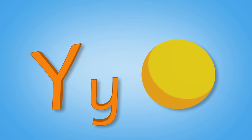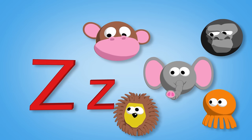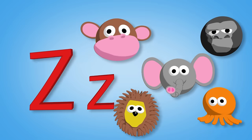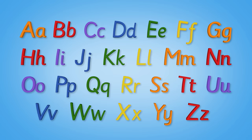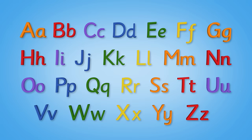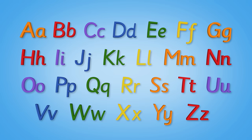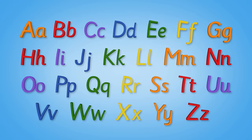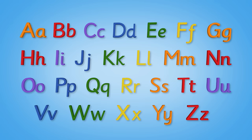Y-y-y-y is for yellow. Z-z-z-z is for zoo. These are all the letters of the alphabet, all lined up for me and you. This is our phonic song,